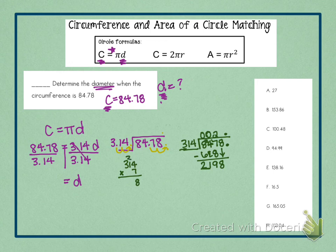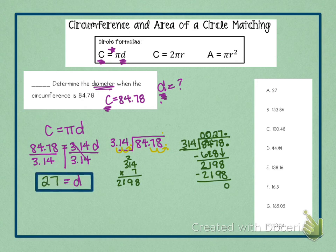7 times 4 is 28. 7 times 1 is 7 plus 2 is 9. And 7 times 3 is 21. Look at there, I didn't think that was going to work out so nicely. Minus 2198 is 0. So, diameter is 27. That was nice. And if we look over here, 27 is option A. So A.